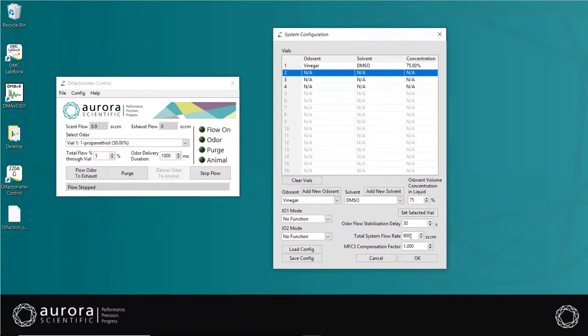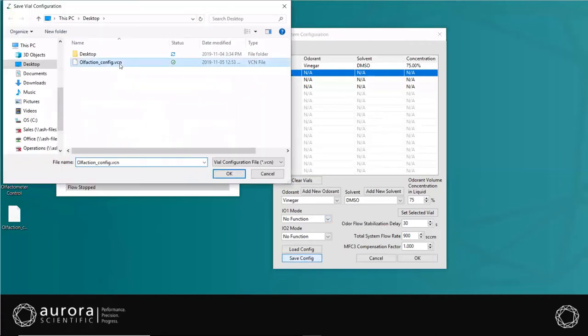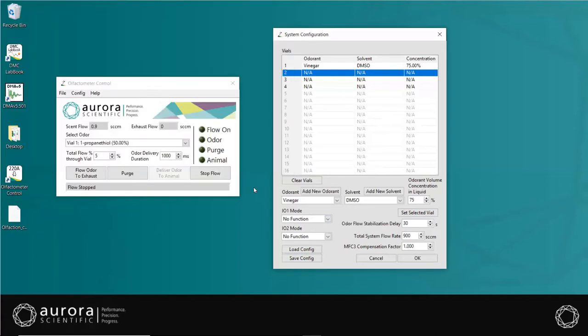Set the total system flow rate up to 950 SCCMs, which is equal to the sum of the odor and dilution flows. For more detail on I01 and I02 modes for external triggering, refer to the manual. When finished, save config to a file for future use. Then click OK.